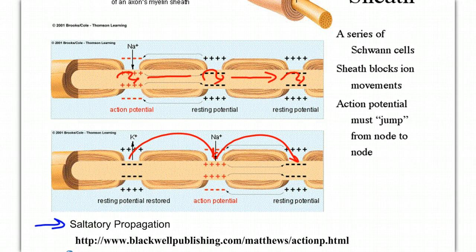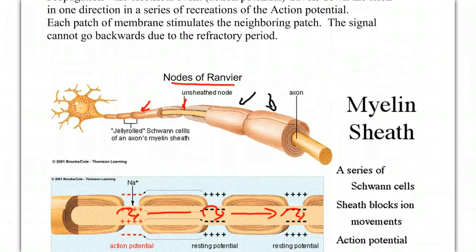This type of propagation is called saltatory propagation — we're somersaulting, jumping across from one node of Ranvier to the next node of Ranvier, and that speeds up the rate of action potential transmission down the axon. Not all axons are myelinated, but most of the axons out in the body are myelinated, and this myelin sheath insulates with these Schwann cells and speeds up the propagation of the action potential down the neuron. So that does it for our review on action potentials and the propagation of action potentials. Look over your notes, watch the video, and bring any questions you have into class.